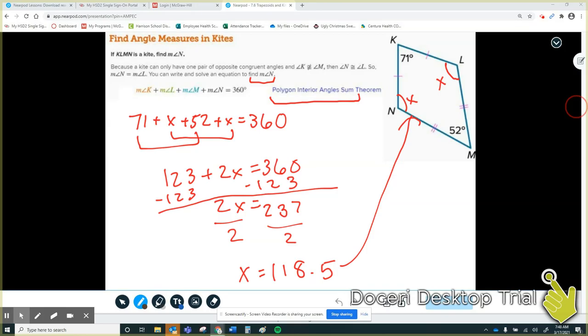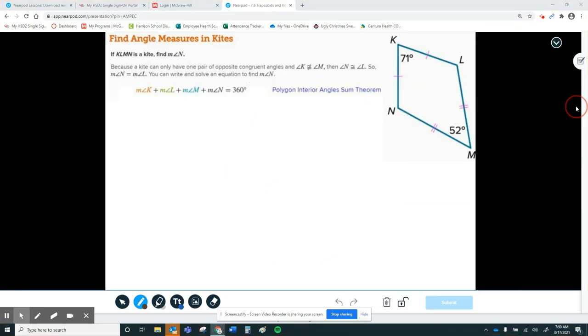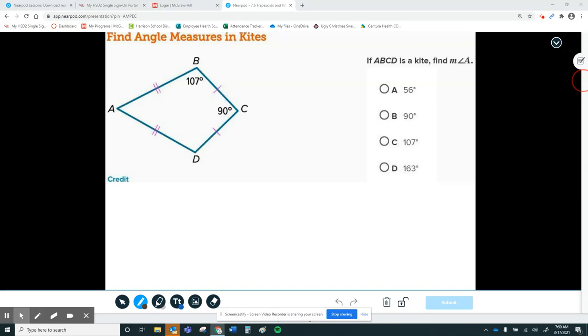So again, quadrilaterals on the inside add up to 360. Use the relationships you know to set up the information you don't know and solve for it. Again, if ever I'm moving too quickly, you can always pause the video or rewind it to figure out what I did or to look back at what I did. So this is another practice problem that you could do to try it. This one wants you to find angle A.